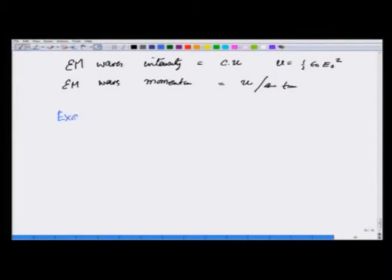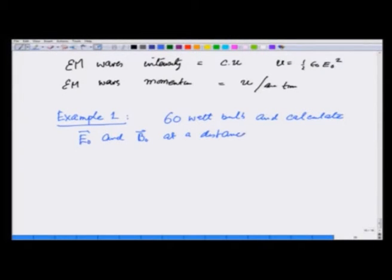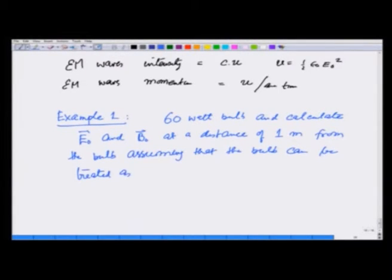As example 1, let us take a 60 watt bulb, that means the light coming out is equivalent to power being 60 watts. And calculate electric field amplitude and magnetic field amplitude at a distance of 1 meter from the bulb, assuming that the bulb can be treated as a point source.